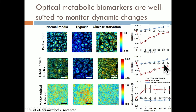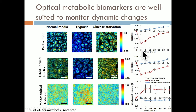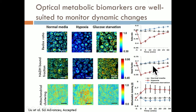Interestingly, when we introduce hypoxia, the redox ratio goes down. When we starve glucose, the redox ratio starts to go up. So things change in different ways depending on the type of metabolic perturbation we introduce.